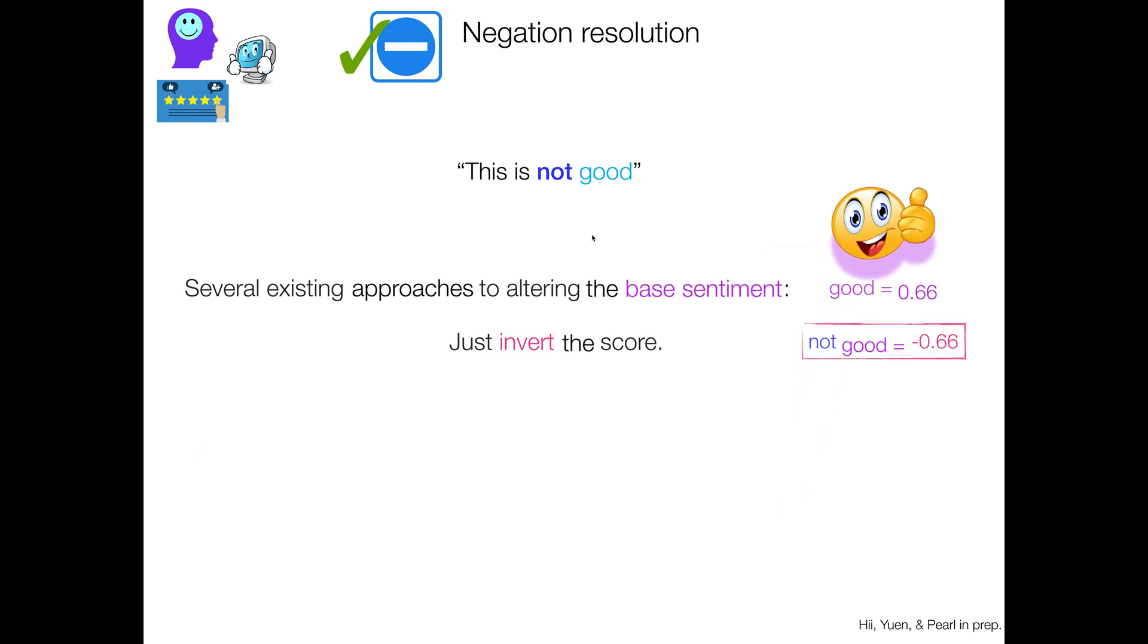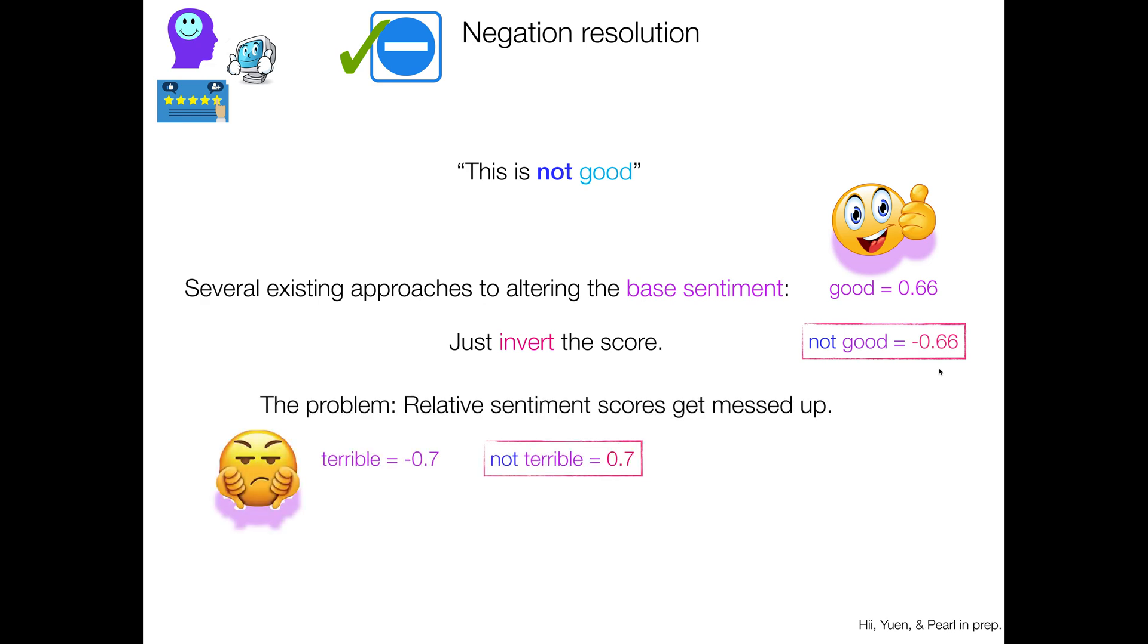So there are several existing approaches to therefore altering that base sentiment score. And one of them is the simplest one, is just invert it. So if good is 0.66, then not good can be negative 0.66. That's kind of negative. And the problem sometimes is that relative sentiment scores get messed up. So terrible, in the same lexicon that told us that good was 0.66, so on the positive side of the world, told us that terrible has a base sentiment of negative 0.7 on the negative side of the world. Nothing wrong with that.